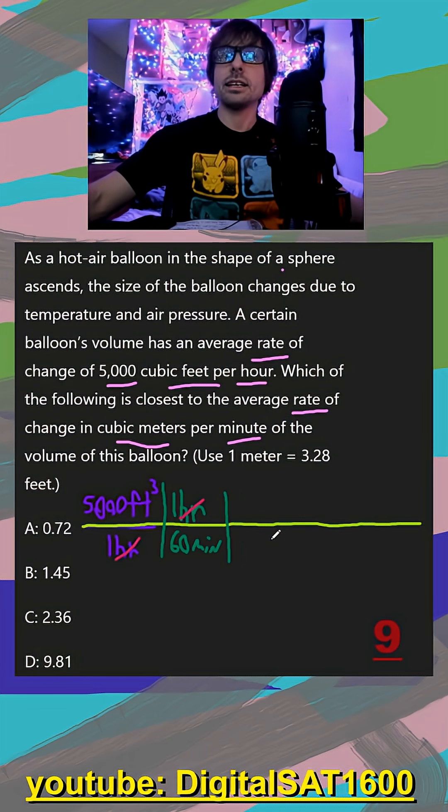So again, diagonally, our units, we want feet, but specifically, we want 3.28 feet, because that's going to get us one meter. So I would put 3.28 feet diagonally because they'll cancel out, and then I put one meter up above.